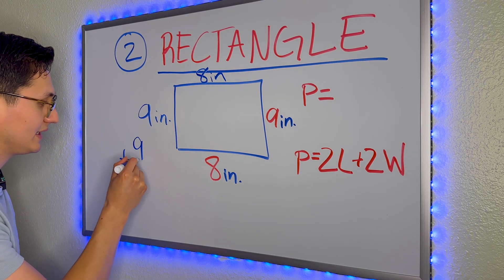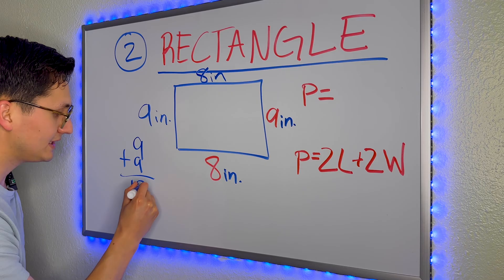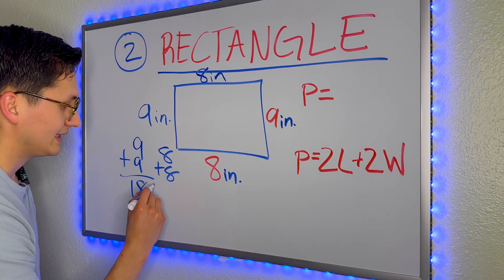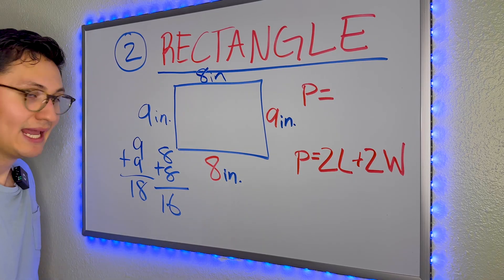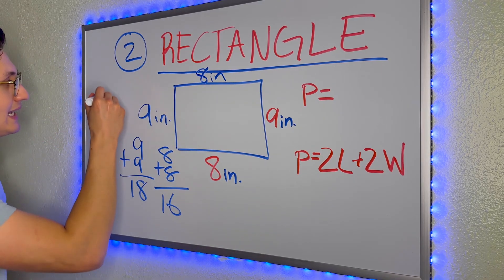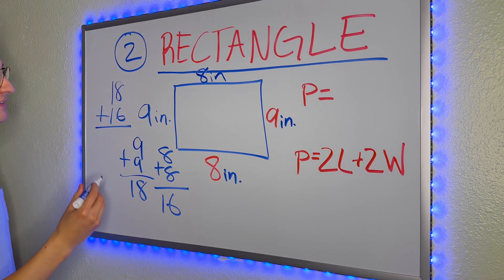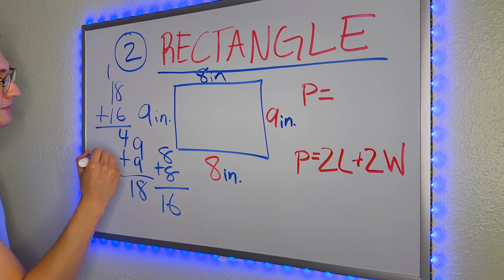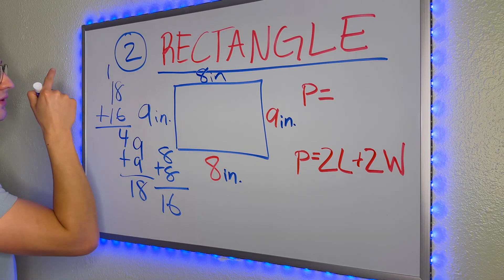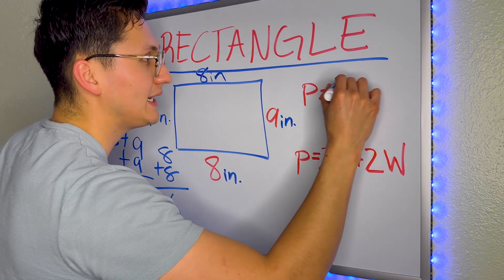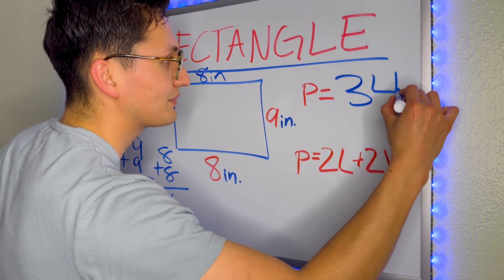So nine plus nine is 18. Eight plus eight is 16. And then we combine them. 18 plus 16. Eight plus six is 14. One, two, three. We get 34. The perimeter is 34 inches.